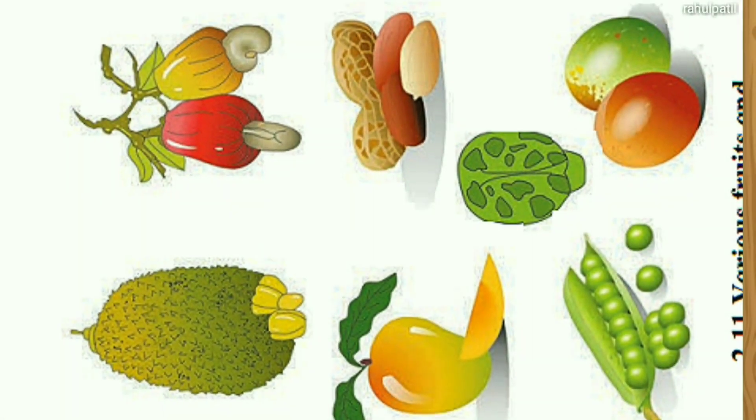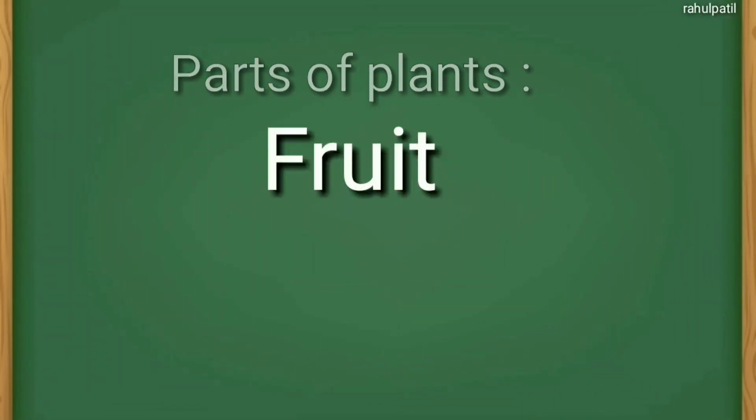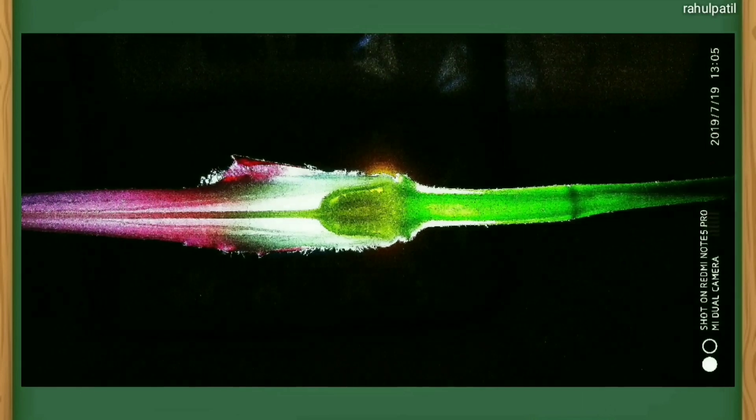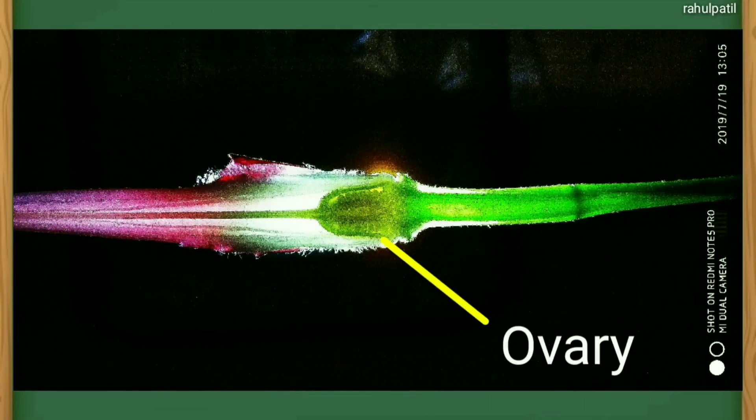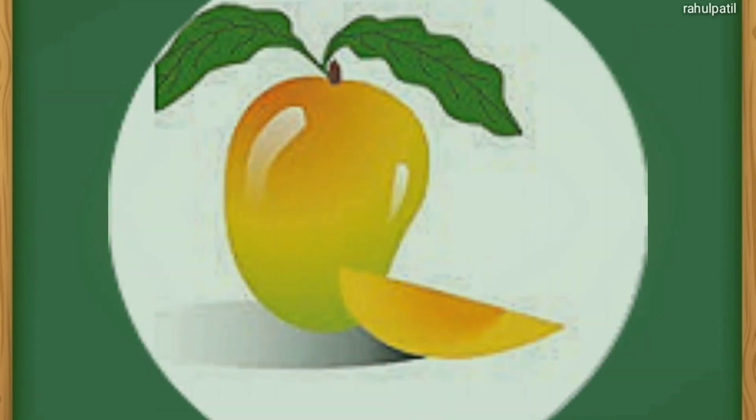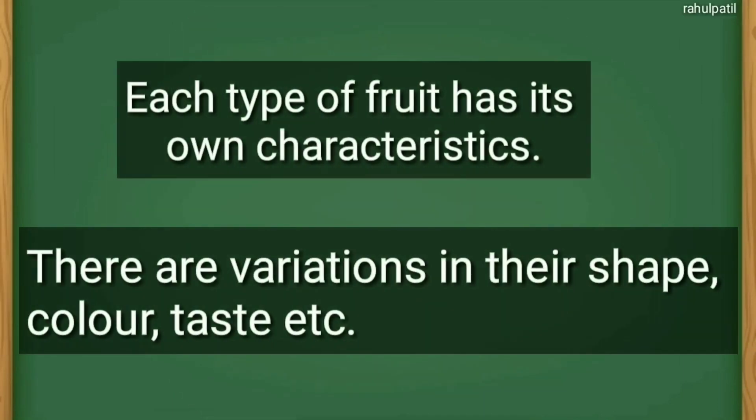The next part of the plant is fruit. We know that fertilized ovules form the seeds and the ovary develops into a fruit. We eat many different types of fruits. Each type of fruit has its own characteristics. There are variations in their shape, color, taste, etc.